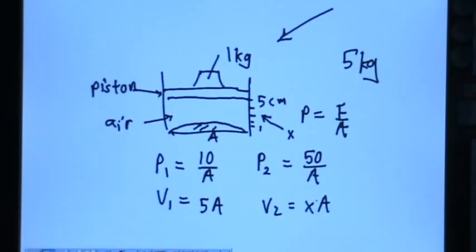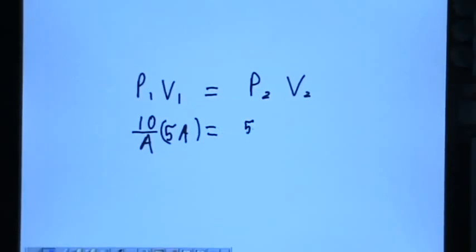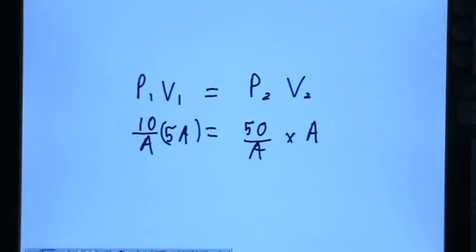And so because of this, I can use Boyle's Law. P1V1 equals P2V2. So 10 over A times 5A equals 50 over A times XA. The A's cancel out. I get 50 here and 50X here.